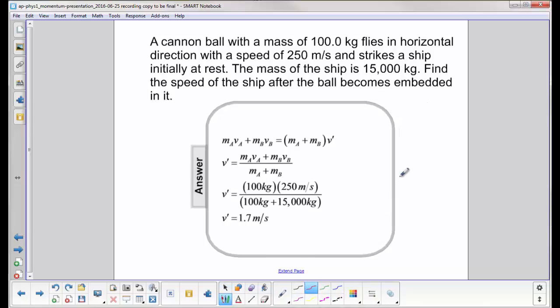What we have here is a perfectly inelastic collision where the two initial momentum add up to a final momentum of the objects combined, m_a plus m_b. It is now one object times the final velocity, v prime. We solve for v prime.